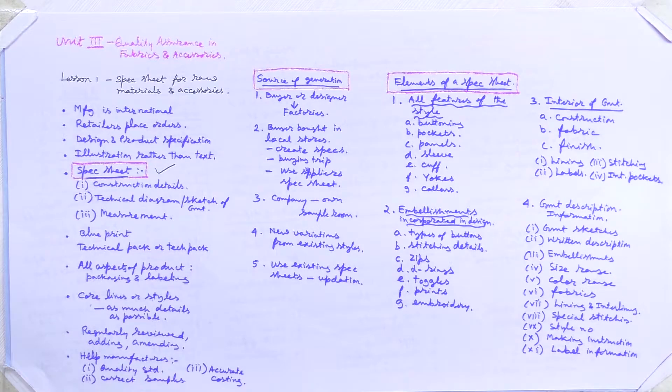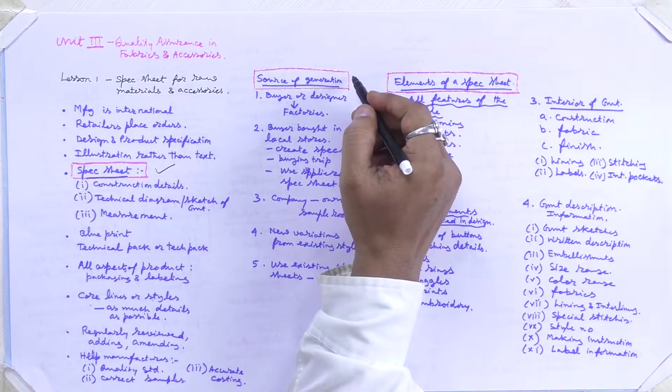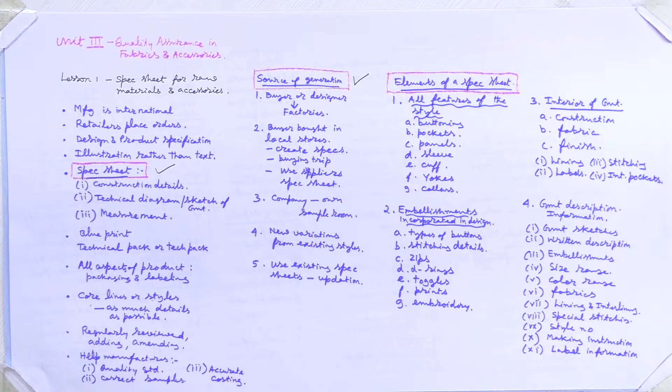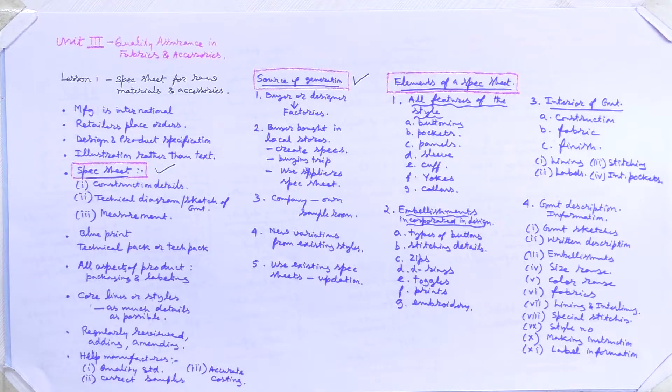Now we will see the source of generation of the specification sheet — how it is generated, what steps are involved, and who generates it. Number one: the buyer or designer generates the specification sheet based on their own experience and then communicates it to the factory. This is one way the specification sheet can be generated, based on the previous experience of the buyer, retailer, or designer.